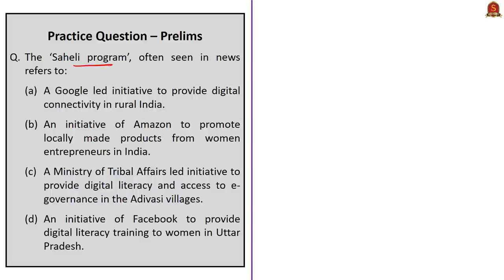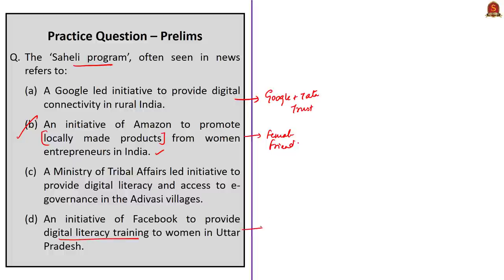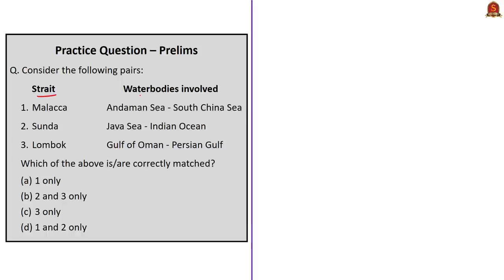The next question is about the Saheli program often seen in news. Option A corresponds to the Internet Saathi program — a digital literacy initiative of Google and Tata Trusts bridging the digital gender divide in rural India. Option B — an initiative of Amazon to promote locally made products from women entrepreneurs in India — is correct. 'Saheli' means female friend, connected with women entrepreneurs. Option D corresponds to the 'We Think Digital' program in Uttar Pradesh, wherein Facebook, the National Commission for Women, and the Cyber Peace Foundation collaborated. Correct answer: option B.